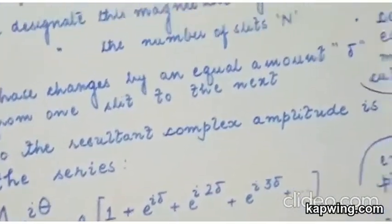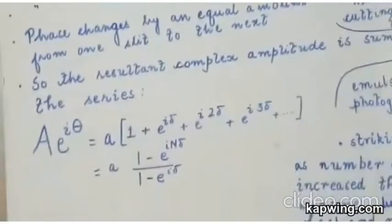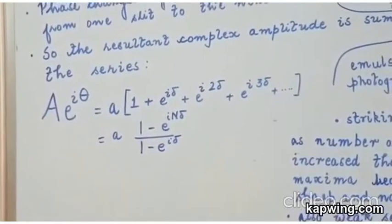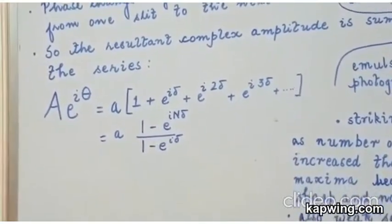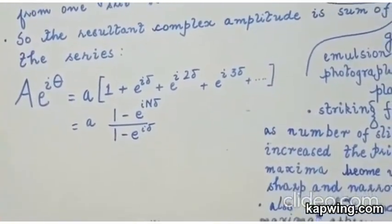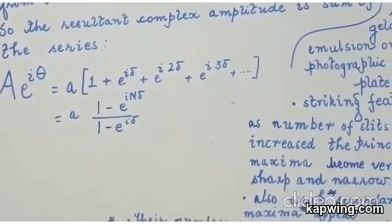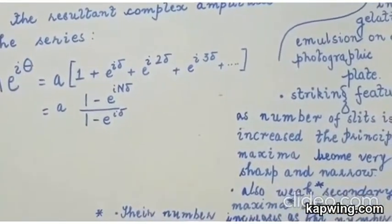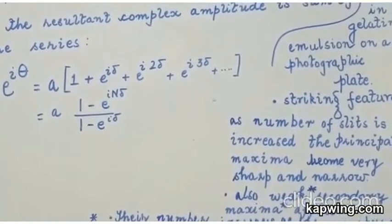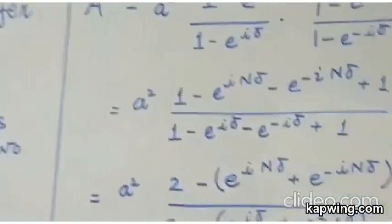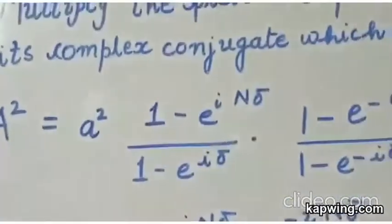So the resultant complex amplitude can be written down as a series given by A e to the i theta. And then I have written an expansion which goes as A within brackets 1 plus e to the i delta plus e to the i 2 delta plus e to the i 3 delta and so on. Since this is a geometrical progression you know the sum is going to be given by A 1 minus e to the i n delta divided by 1 minus e to the i delta.